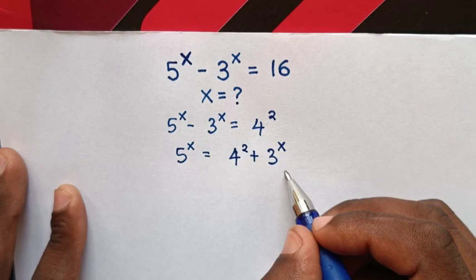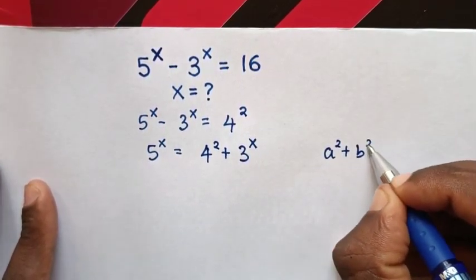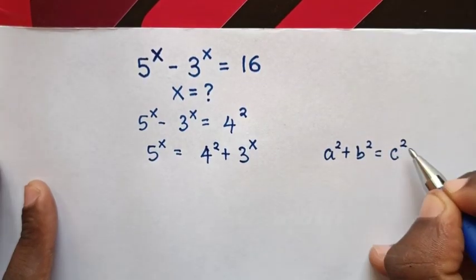Then next step, from here we will apply Pythagoras theorem, where a^2 + b^2 = c^2.